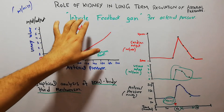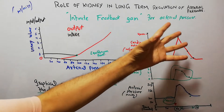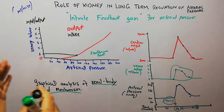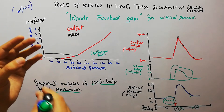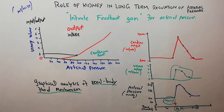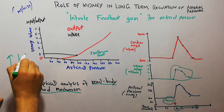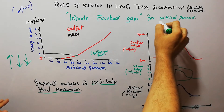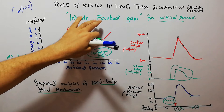Today in this lecture we are going to talk about the infinite feedback gain for the arterial pressure. Basically this is a graphical analysis of the renal body fluid mechanism. In the renal body fluid mechanism, when the arterial pressure increases, the kidneys lose fluid and try to bring the arterial pressure back to normal. The system used for the arterial pressure to be maintained at normal level or at equilibrium point is the infinite feedback gain.